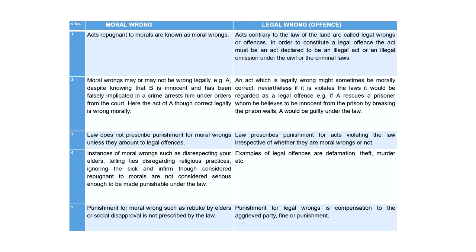Offense is a broad term — whether you do an act which is a civil wrong or a criminal wrong, offense covers anything forbidden by the law. Moral wrongs may or may not be legally wrong. For example, A knows that B is innocent and has been falsely implicated in a crime, yet arrests him under orders from the court. Although he knows the person he has gone to arrest is innocent, it is his legal duty to arrest that person. What he has done is a moral wrong, but legally it is correct because it was something expressly enjoined by the law.